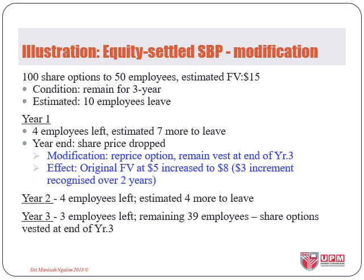For the modification illustration, a company granted 100 share options to each of 50 employees, with fair value estimated at $15 at grant date and a service condition of 3 years. It was estimated that 3 employees would leave. In year 1, 4 employees left and the company estimated another 7 to leave over the remaining 2 years. There was also a drop in share price, so the company repriced the options. At repricing date, the original fair value was $5 and after repricing it changed to $8, an incremental increase of $3 to be recognised over the remaining 2 years. In year 2, 4 more employees left, and in year 3, 3 more left, leaving 39 employees.